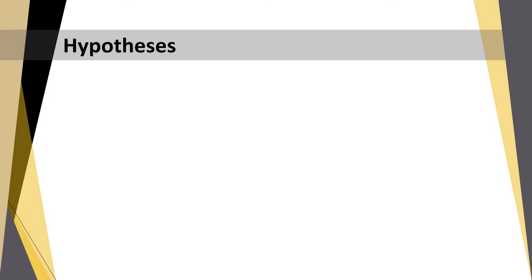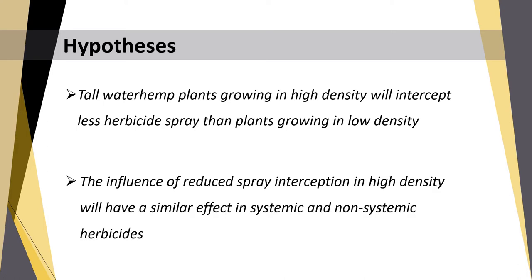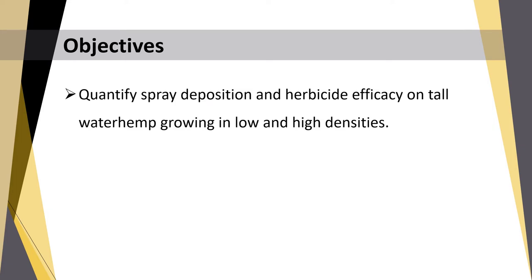Considering all this information, we proposed two hypotheses. The first was that tall waterhemp plants growing in high density will intercept less herbicide spray than plants growing in low density. The second was that the influence of reduced spray interception in high density will have a similar effect on both systemic and non-systemic herbicides. To test these hypotheses, we developed two objectives.